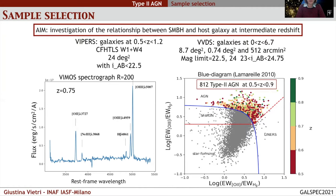Both surveys were observed with the VIMOS spectrograph in low resolution mode. Here is an example of a spectrum with emission lines of interest such as [OII], H-beta, and the [OIII] doublet. We used the blue diagram from Lamareille 2010 to discriminate between different sources of ionization such as AGN, LINERs, and star-forming regions, with an area of composite star-forming and AGN. This diagram uses the equivalent width ratios of [OIII] over H-beta and [OII] over H-beta.